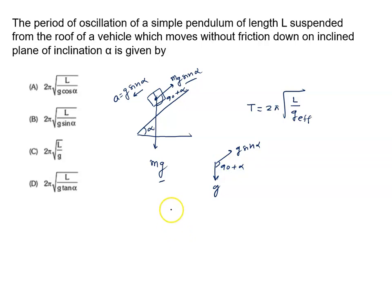If there are two forces p and q acting at any angle theta, the resultant is given by r equals root p square plus q square plus 2 p q cos alpha. Apply the same identity. We can write root g square plus g square sin square alpha plus 2 g into g sin alpha into cos 90 plus alpha.